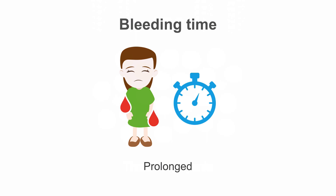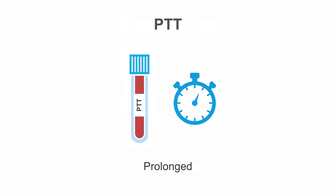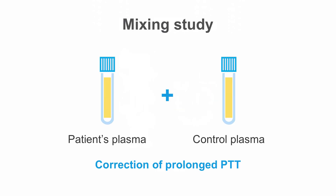Bleeding time, although not a test ordered often, will be prolonged. This is because in von Willebrand's disease there is defective platelet adhesion. In von Willebrand's disease there are also reduced levels of factor 8, which will result in prolonged PTT. A mixing study should show correction.